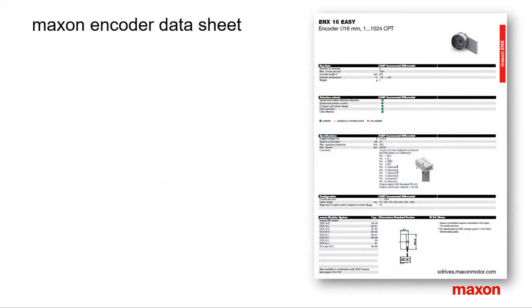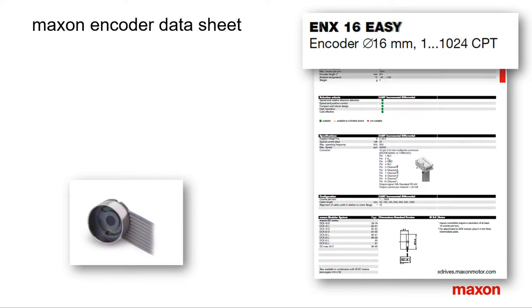Let's have a look at the Maxon encoder datasheet. Where can you find the information that we have been discussing? As an example, we take the configurable ENX16 easy encoder with a resolution of up to 1024 counts per turn.